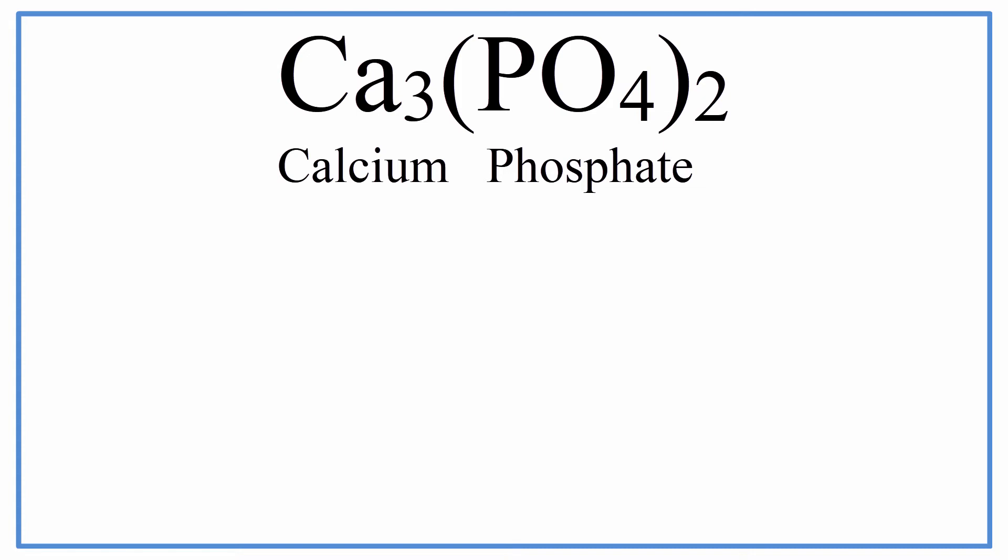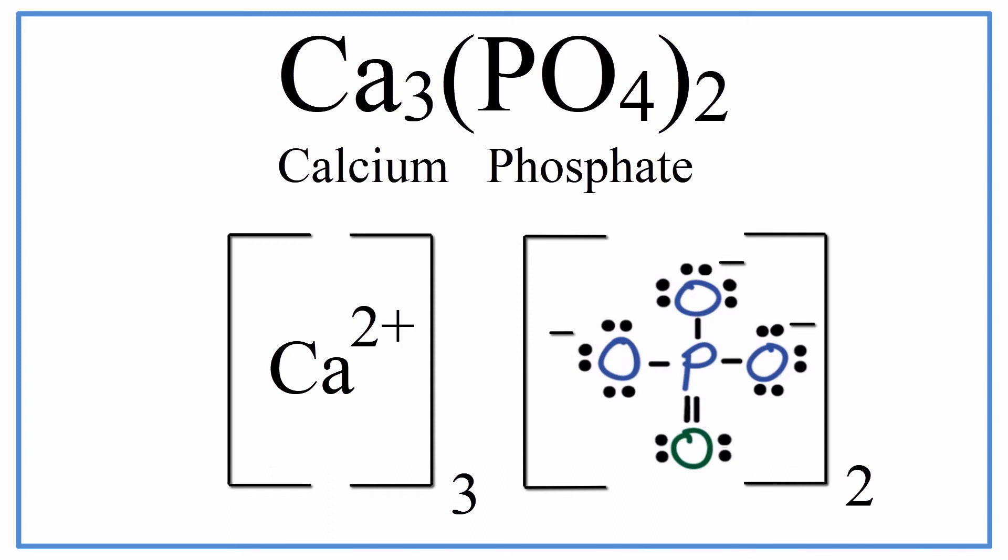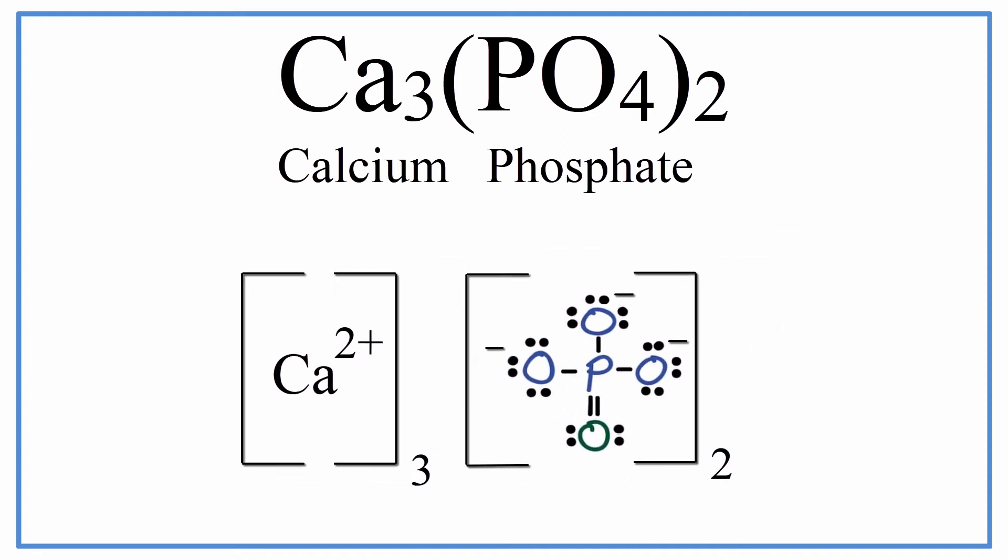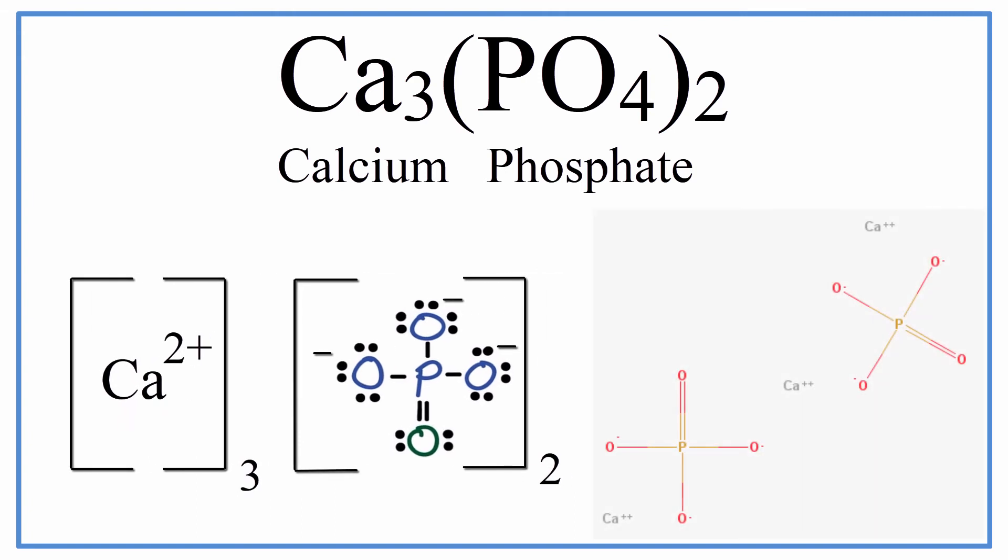We could also represent this, instead of a formula, as a Lewis structure. That might look something like this, where we have those three calcium ions and those two phosphate ions. And you can see there's three negative charges, just like we saw on the chart, the negative 3. We could also write it like this, where we have the individual ions separated in the Lewis structure.